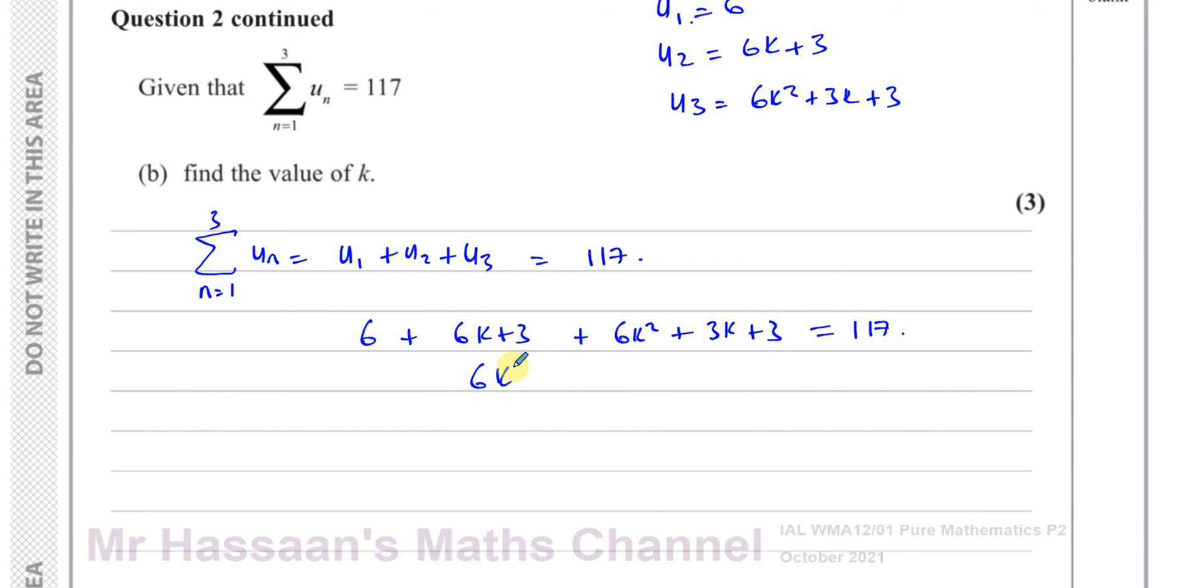I'm going to simplify this. I've got 6K squared, then 6K plus 3K which is 9K, then 6 plus 3 plus 3 which is 12, equals 117.